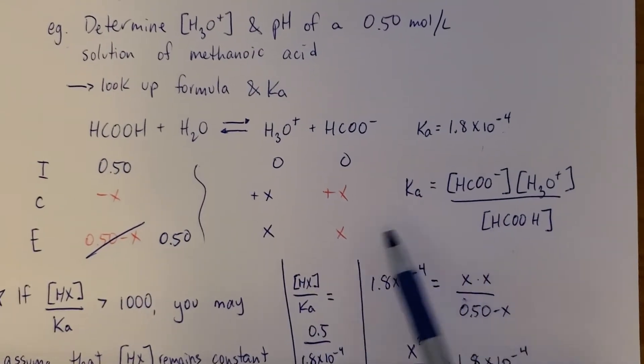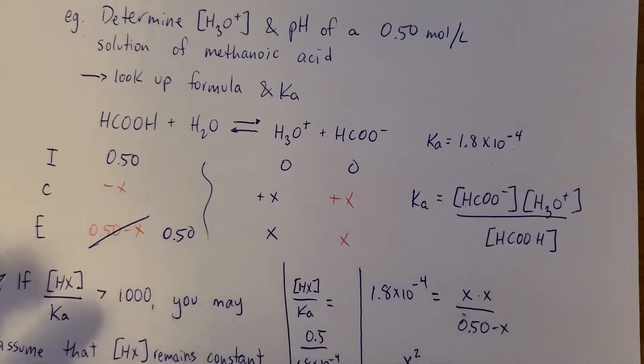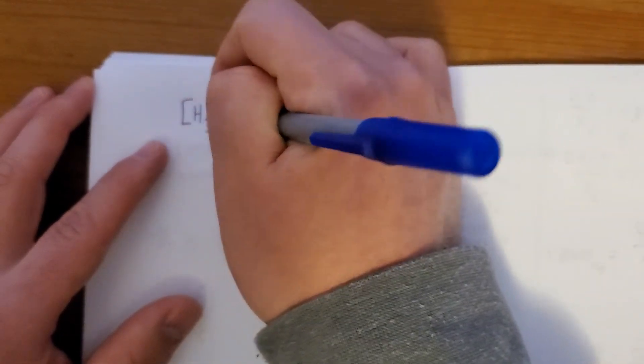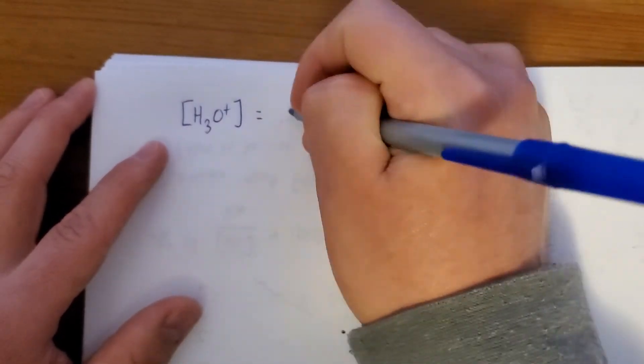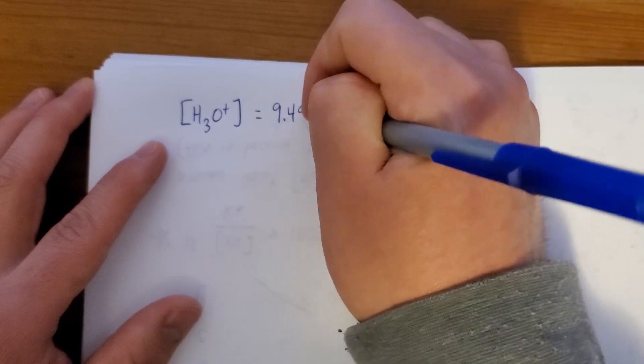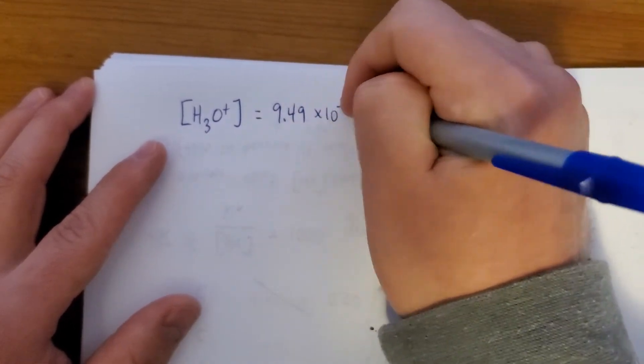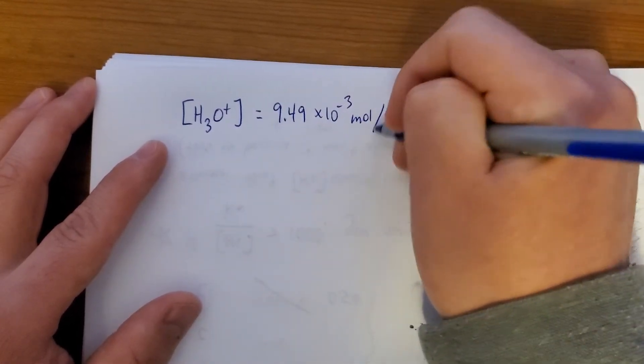The way we set this up, though, is we called x the hydronium concentration. So by doing all that, we just found out that the hydronium concentration in this sample of methanoic acid is 9.49 millimoles per liter.